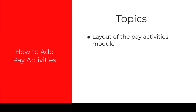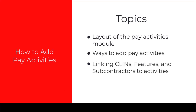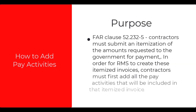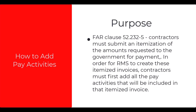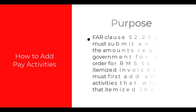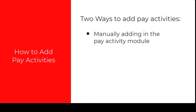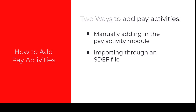In this lesson, we'll be discussing the layout of the pay activities module, adding pay activities, and linking those pay activities to CLINs, features, and subcontractors. Per FAR Clause 52.232-5, contractors must submit an itemization of the amounts requested to the government for payment. This is done in RMS by first adding all the pay activities that will be included in that itemized invoice prior to creating the first invoice. There are two ways to add pay activities in RMS: the first is to manually add them, which is what we will be focusing on for this training, and the second is through importing an SDEF file, which will be discussed at the end of this training.